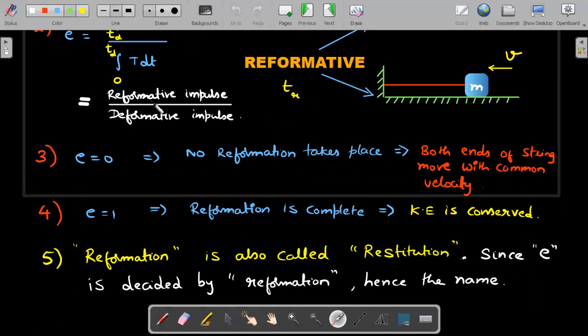In general, the reformation won't be complete but will start. The coefficient of restitution lies between zero and one. The word reformation is also called restitution, and because restitution decides the value of E, E is decided by reformation. Hence the name coefficient of restitution - they don't call it coefficient of deformation.